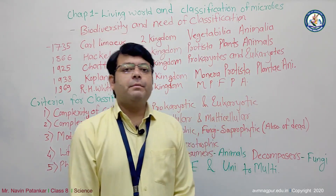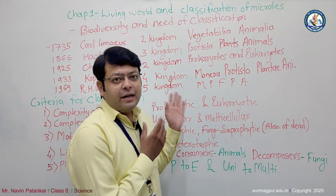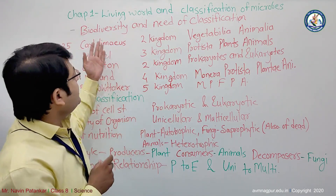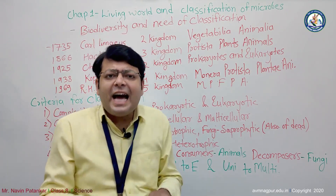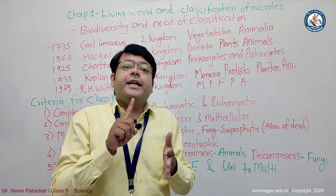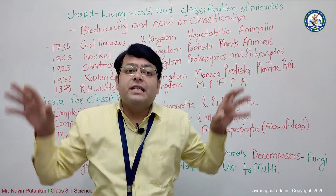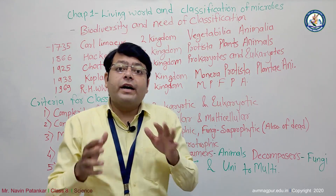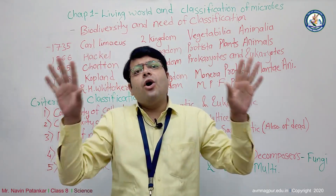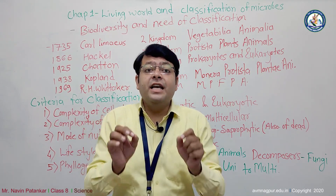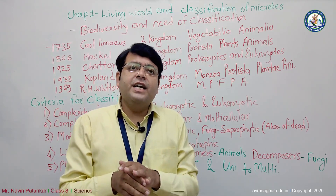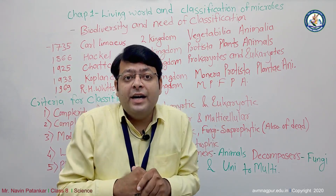Hello, welcome to my biology class. We are going to study Class 8, Chapter 1. The chapter's name is 'The Living World and Classification of Microbes.' In the living world, we have already studied in previous years about the living world, adaptation, earth's living systems, microbes, plants, and animals. These all come under the living world, and we have seen different types of living systems and living things on our earth.